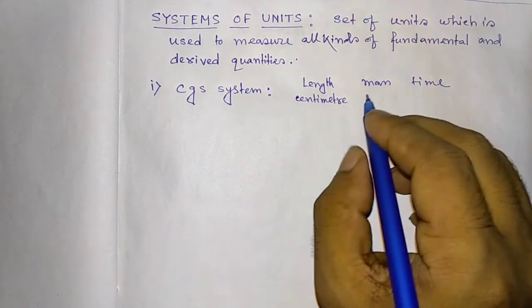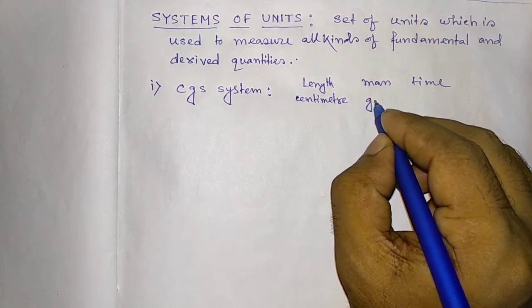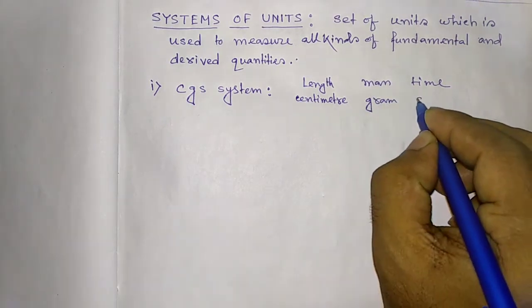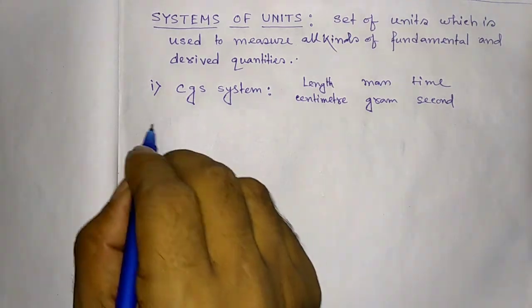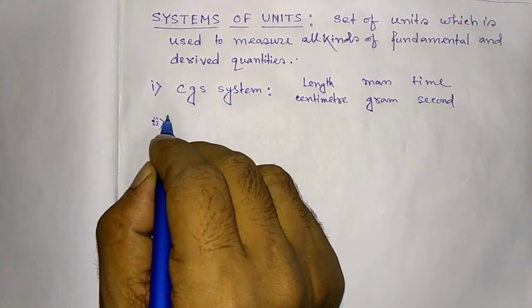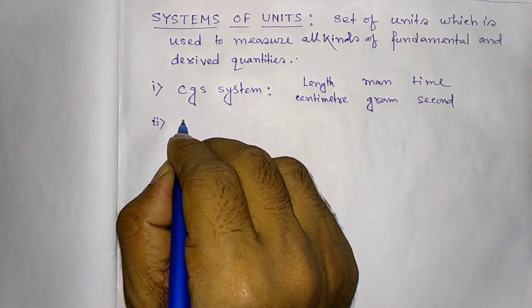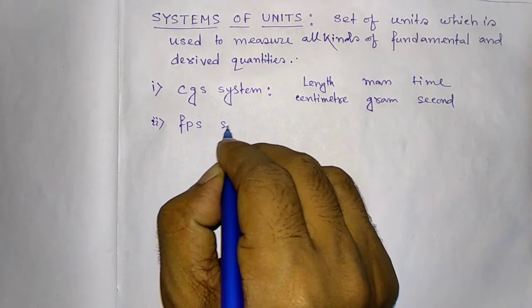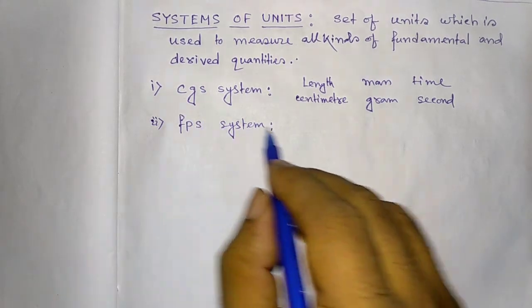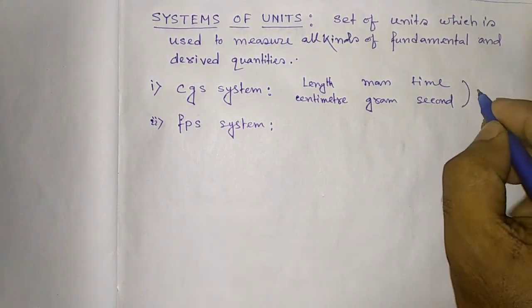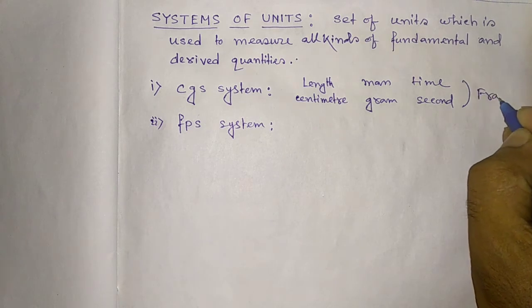centimeter, gram and second. Number two is FPS system. CGS system is a French system.